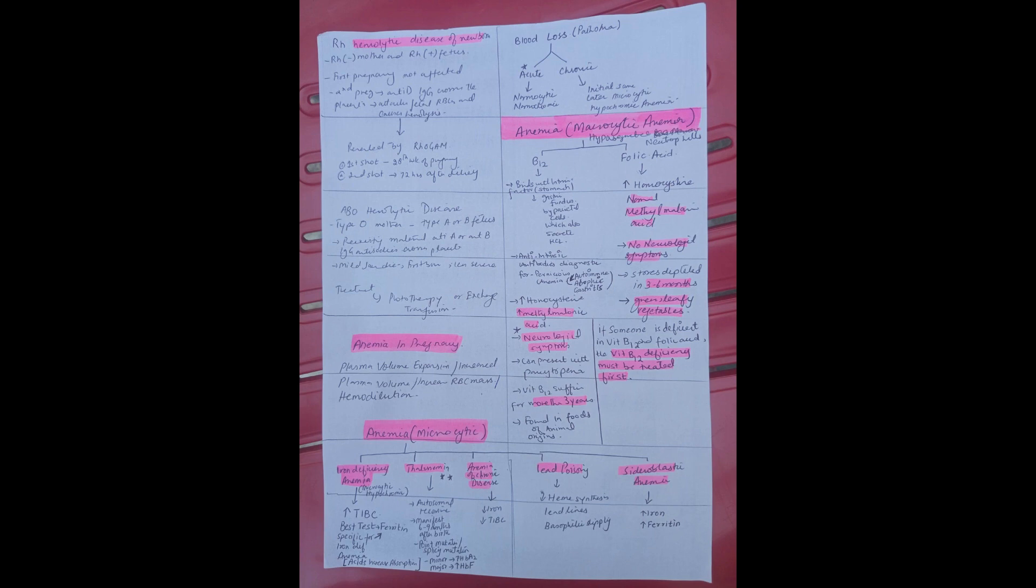All these terms mean the same. So if there is any of these options in the MCQ stem, then that is the cause of anemia in pregnancy. That is the most common cause.